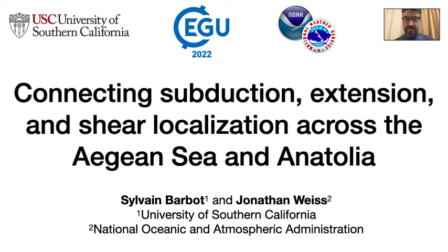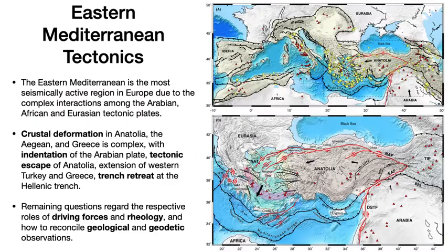Hi and welcome to this EGU talk, and thank you to the organizers for the kind invitation. The Mediterranean Basin is the locus of a diffuse collision zone between the African, Arabian and Eurasian tectonic plates at the western edge of the Alpine Himalayan Orogenic Belt.